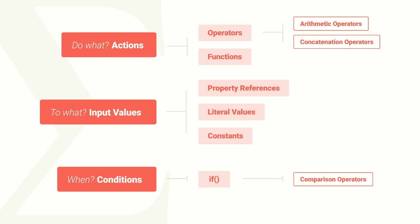Let's start with actions. When composing your formula, you can define actions in one of two ways: operators or functions. Operators are very simple — you're already familiar with them. An operator is a character you place between two values to perform an action on those values. The plus sign performs addition, the minus sign performs subtraction, the star character performs multiplication, the backslash performs division, and the percent sign returns the remainder after division.